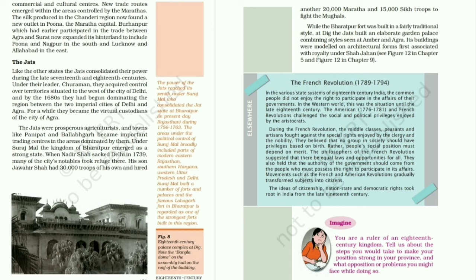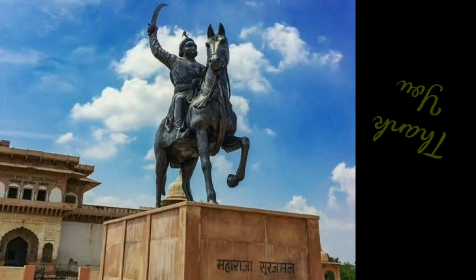The French Revolution (1789–1794) and the American Revolution (1776–1781) brought major changes in the privileges enjoyed by the aristocracy. The clergy and the nobles of France were powerful and influential, but the middle classes, peasants and artisans rose in revolt against them. The French revolutionaries wished people to attain social positions on the basis of their qualities and merit and demanded equality for all. They wanted governance of the state to involve the common people, and thus people now became citizens. By the late 19th century, India also saw the emergence of citizenship, nation state and democratic rights. After watching the video clip, read the chapter.